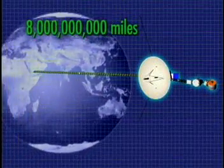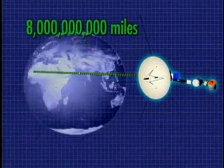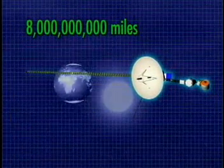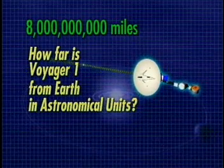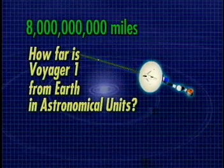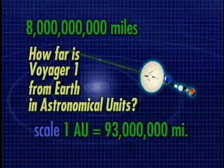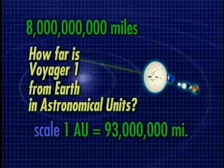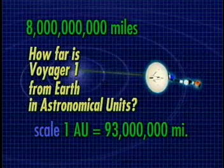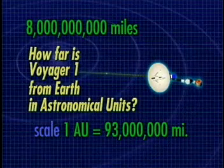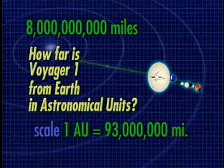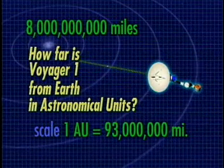Working with a partner, take a few minutes and see if you can solve this problem. Voyager 1 is over 8 billion miles away from Earth. Estimate how far, in astronomical units, Voyager 1 is from the Earth. Remember the scale is 1 astronomical unit equals 93 million miles. Teachers, you may now pause the program so students can answer the problem.